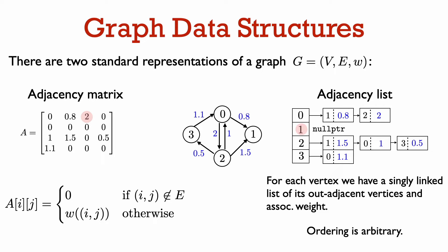If the graph is unweighted, then the adjacency matrix would just be a binary matrix — every entry would either be 0 or 1. And in the adjacency list, we would not have to store the weights of edges, so the nodes in the list could just hold the names of vertices.